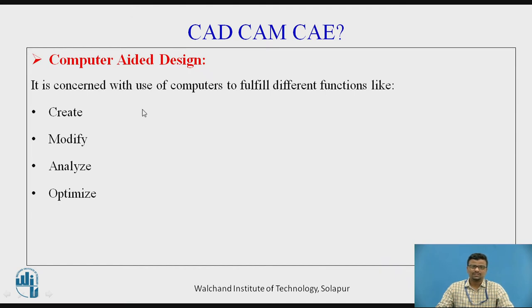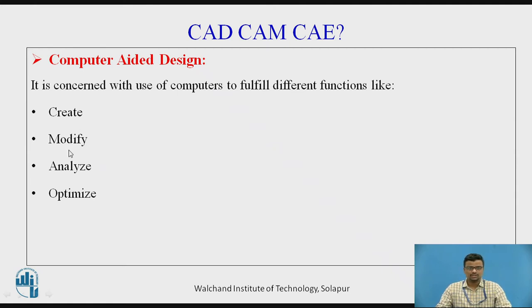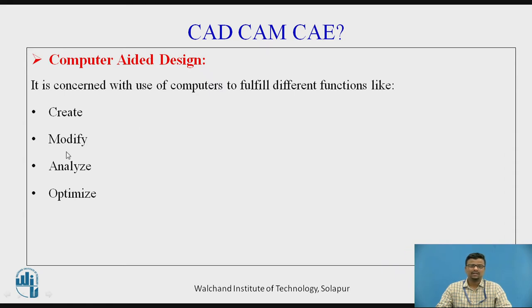The different functions include: first, creation — we have to create a design, create a 3D model, or maybe a computer-aided drafting sheet. If modification is required, comparing manual design to computer-aided design, in manual design modification is very hectic. In computer-aided design, we can modify and edit the design because of the use of software.